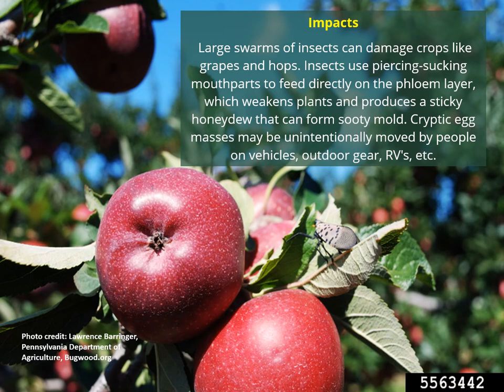These insects can cause significant damage. They really like our crop species like grapes, hops, and apples — species important to New York's economy. They use their piercing, sucking mouthparts to feed directly on the phloem layer of plants, which directly weakens the plant. As a byproduct of this feeding, they produce a sticky honeydew that collects at the base of heavily invaded trees and can form a sooty mold. Also, as mentioned, these cryptic egg masses can be unintentionally moved throughout the state. See how long it takes you to notice the spotted lanternfly hidden among the apples in this photo.